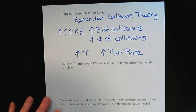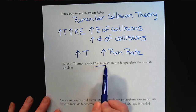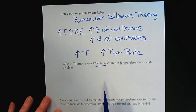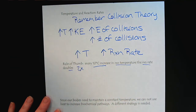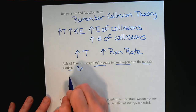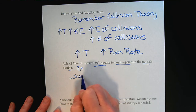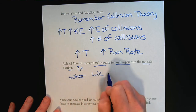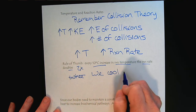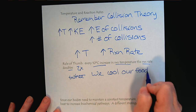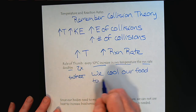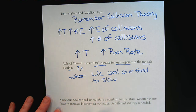There is a rule of thumb: for every 10 degrees that we increase the reaction temperature, the rate doubles. This is an example of why we refrigerate our food — we cool our food to slow down the rate of spoilage, slowing down those reactions inside the food that cause it to rot.